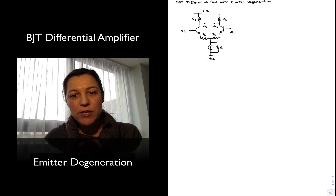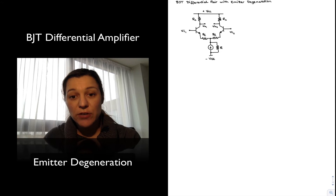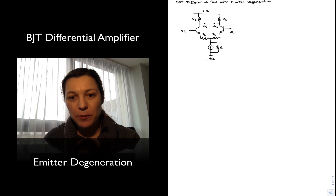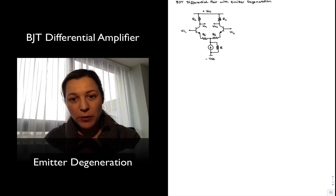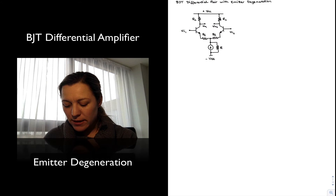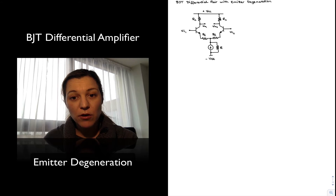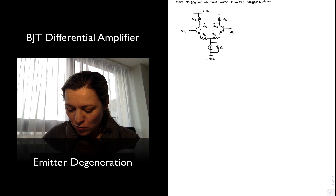In this video we are going to see the effect of emitter degeneration on the performance of the BJT differential amplifier. I have drawn a BJT differential pair and notice that I have added two emitter resistors labeled RE connected to the emitter of Q1 and Q2 respectively, Q1 being the transistor on the left, Q2 the transistor on the right.